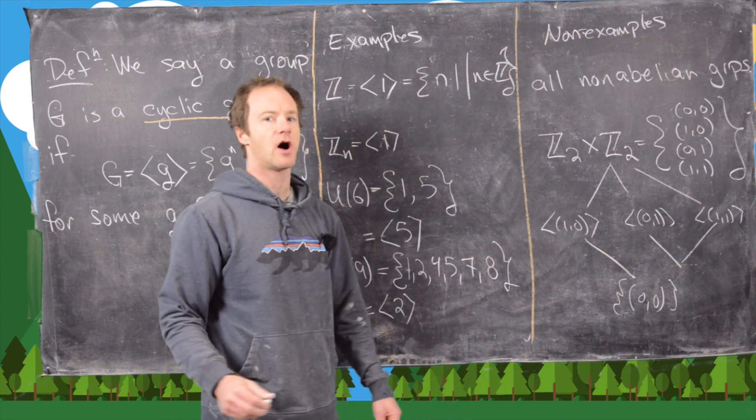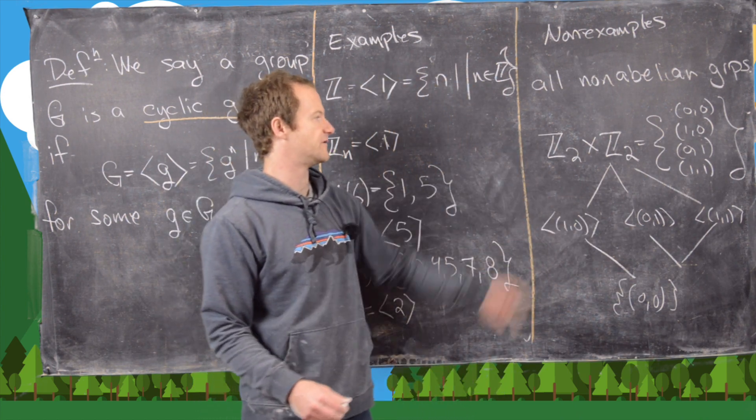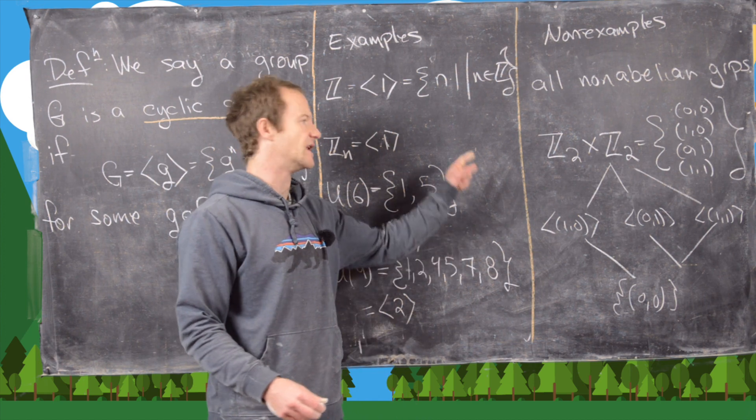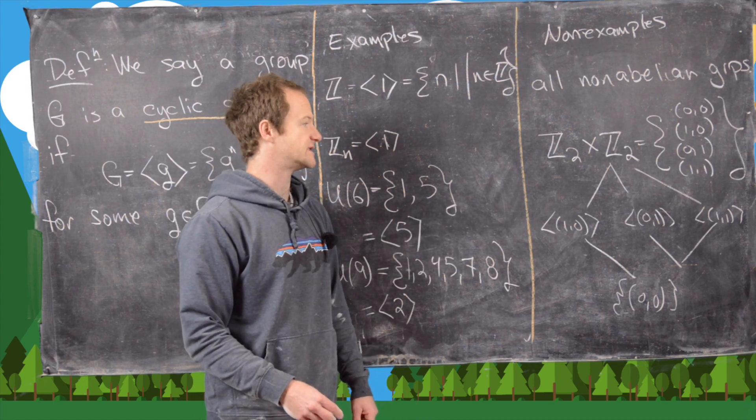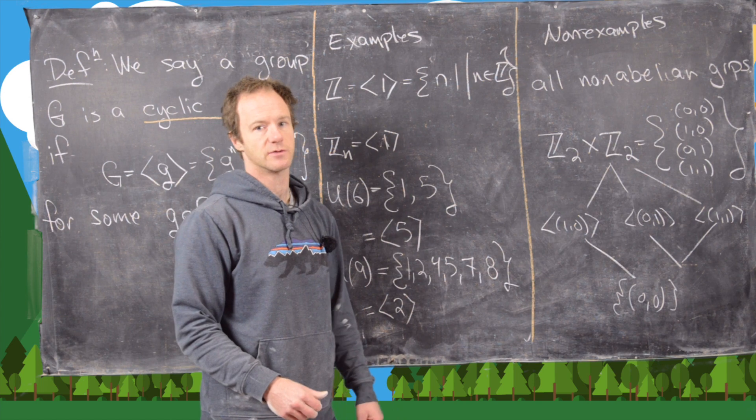Notice in this picture, we've looked at all of the cyclic subgroups of this group Z_2 cross Z_2, and none of them are the entire group.